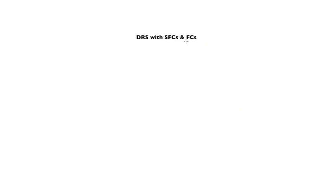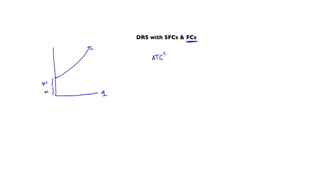Now let's look at the case in which there are semi-fixed costs and actual fixed costs. The total cost function still explodes upward, but now we have both semi-fixed costs and fixed costs. Remember the difference: semi-fixed costs get paid only if quantity becomes positive, while fixed costs get paid even if quantity is zero. To deal with this case, it's useful to define the average total cost taking into account only the semi-fixed costs — which equals average variable cost plus SFC divided by q — and then the average total cost taking into account both kinds of costs, which equals AVC plus SFC plus FC divided by q.